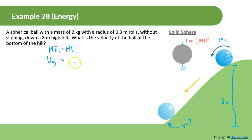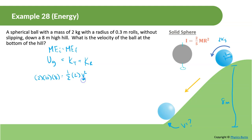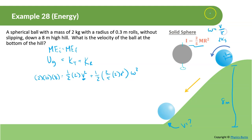At the top there is only potential energy. At the bottom there is translational kinetic energy plus rotational kinetic energy. So: mgh equals one-half mv squared plus one-half I omega squared. For a sphere, I equals two-fifths mr squared. Substituting omega equals v over r, the r-squared terms cancel, leaving only v as the unknown.